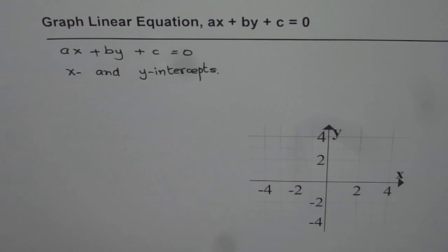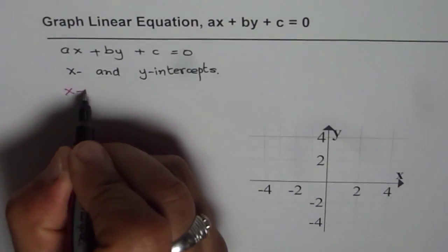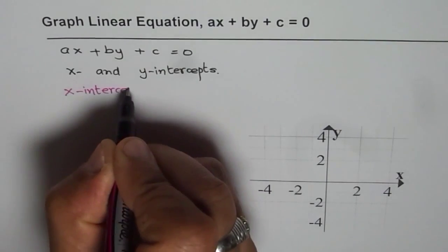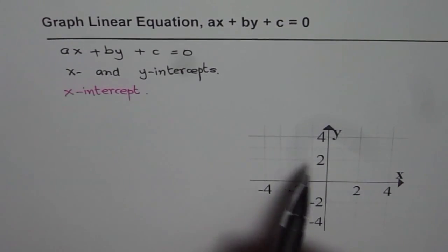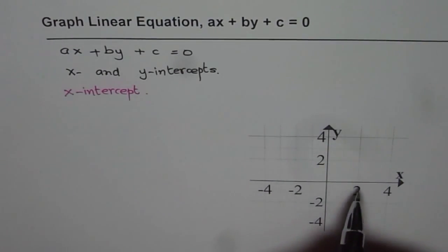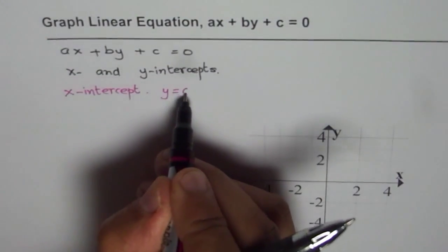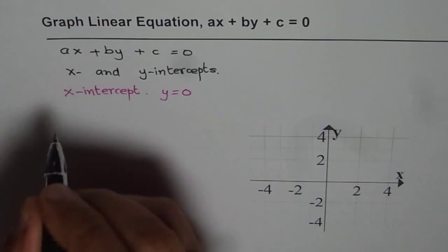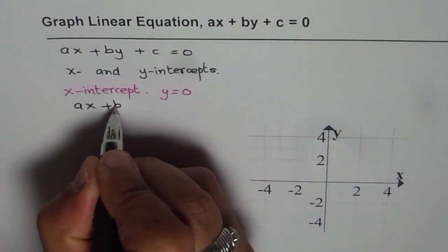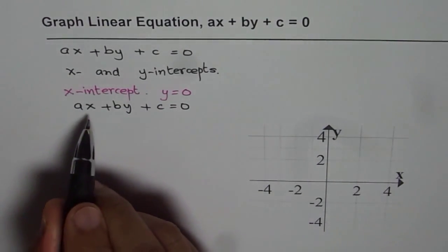Let us understand how to find the X intercept for any given standard equation. The X intercept is a point where the line crosses the X axis. Whenever a line crosses the X axis, at that point the Y value is 0. So we know that at the X intercept, Y equals to 0. Now this helps us find the X intercept. The equation given to us is AX plus BY plus C equals to 0. If we put Y equals to 0, then we can find the value of X.